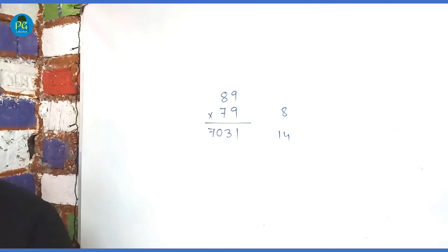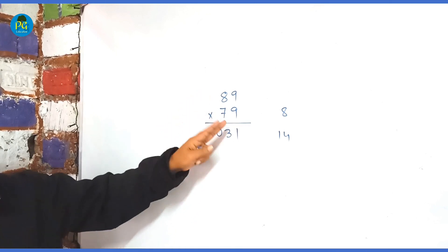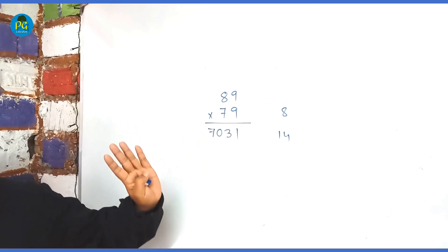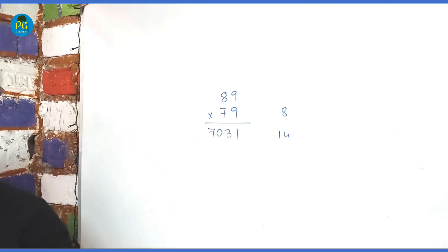So, you understood, whenever there is any two-digit number and which has same numbers at the end, you can apply this rule for any two-digit multiplication.